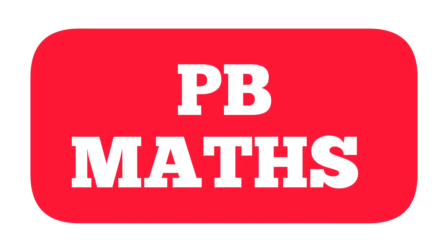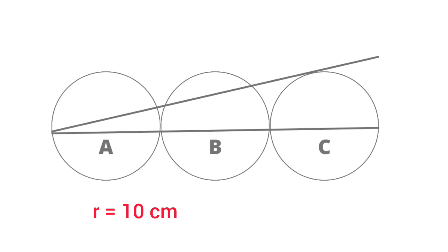Hello everyone, welcome to PB Maths. Three circles of radius 10 cm are arranged with their respective centers A, B and C in a row.